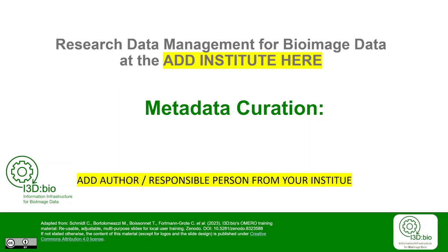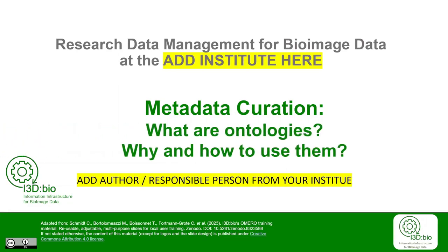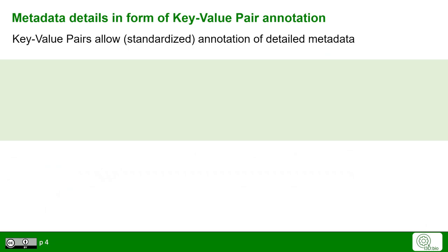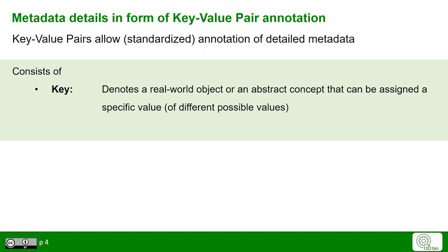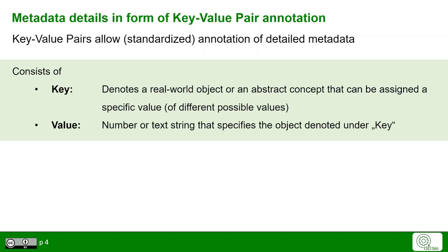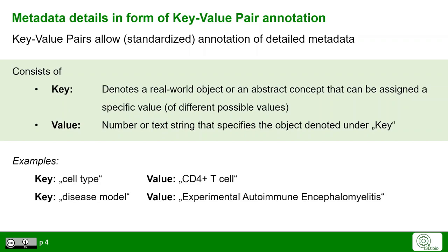Let's discuss ontologies for metadata curation and how to use ontologies in Omero. We have introduced the concept of key-value pairs for metadata annotation, where a key denotes a real-world object or an abstract concept assigned a specific value. The value is the number or text string that specifies this key. Examples include cell type, which could be CD4-positive T-cell, or a disease model, which could be experimental autoimmune encephalomyelitis.